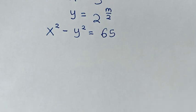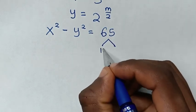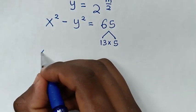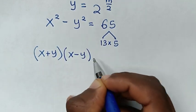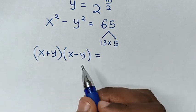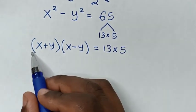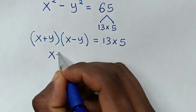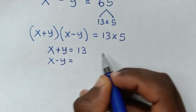Then in the next step, x squared minus y squared is a perfect square, and 65 is the same as 13 times 5. So x squared minus y squared equals x plus y bracket, times x minus y bracket. Since x plus y is greater than x minus y, we assign x plus y equal to 13 and x minus y equal to 5.